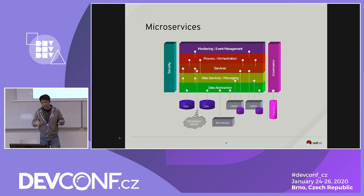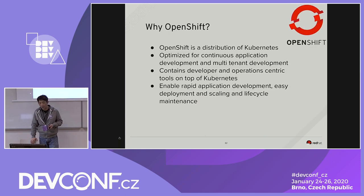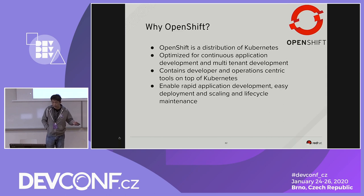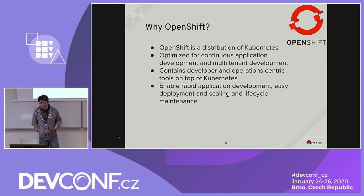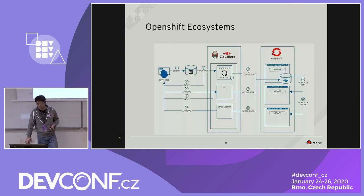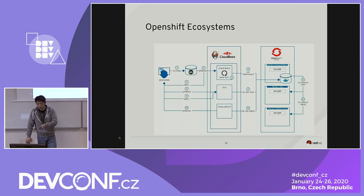Why do we want to use OpenShift? OpenShift is a distribution of Kubernetes, optimized for continuous application CI/CD pipelines, supporting multiple tenants, containing developer and operations-centric tooling on top of Kubernetes, and enabling rapid development, application scaling, and lifecycle management. In this architecture example, developers check code into Git, Git pushes to Jenkins, Jenkins runs the CI/CD deployment pipeline, and at the end it deploys to OpenShift clusters — one for development, one for test, and one for production.